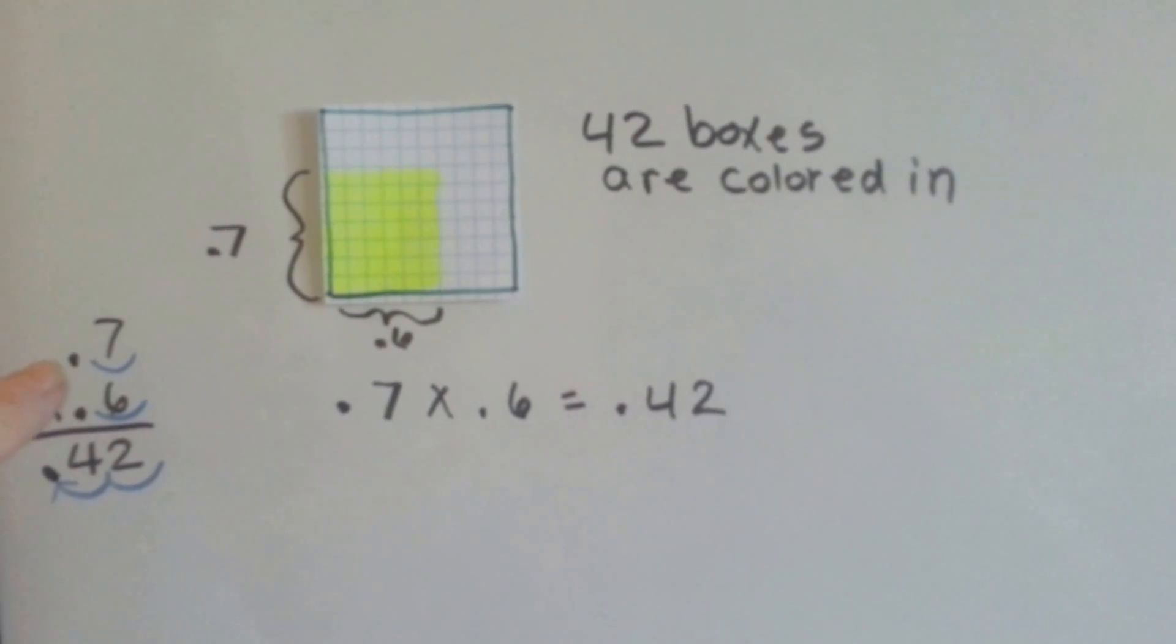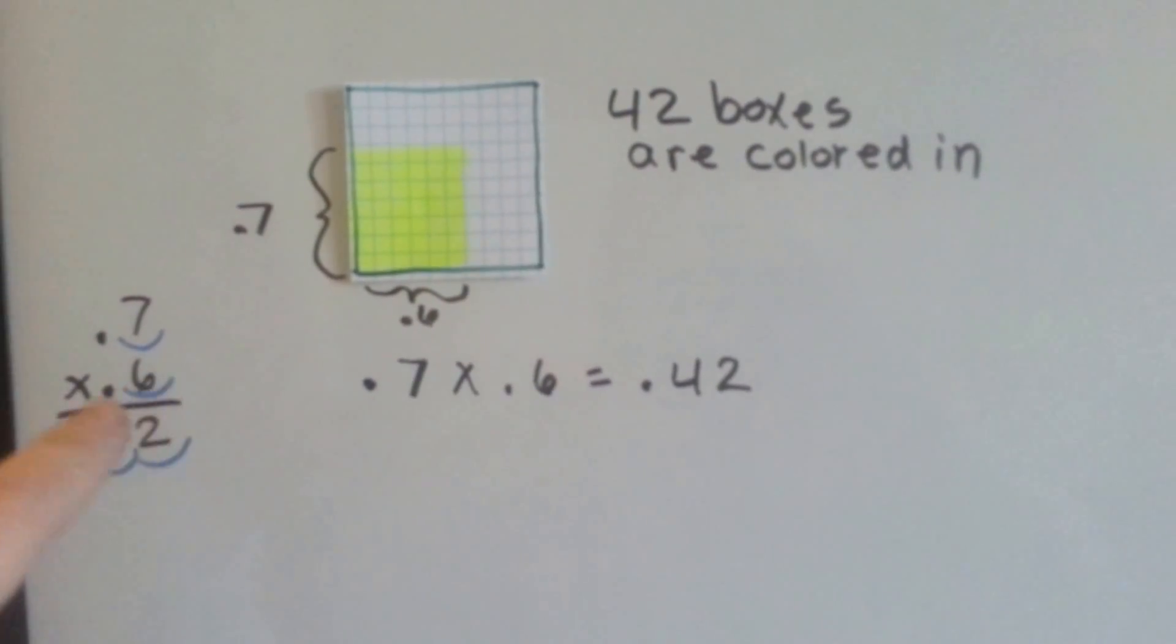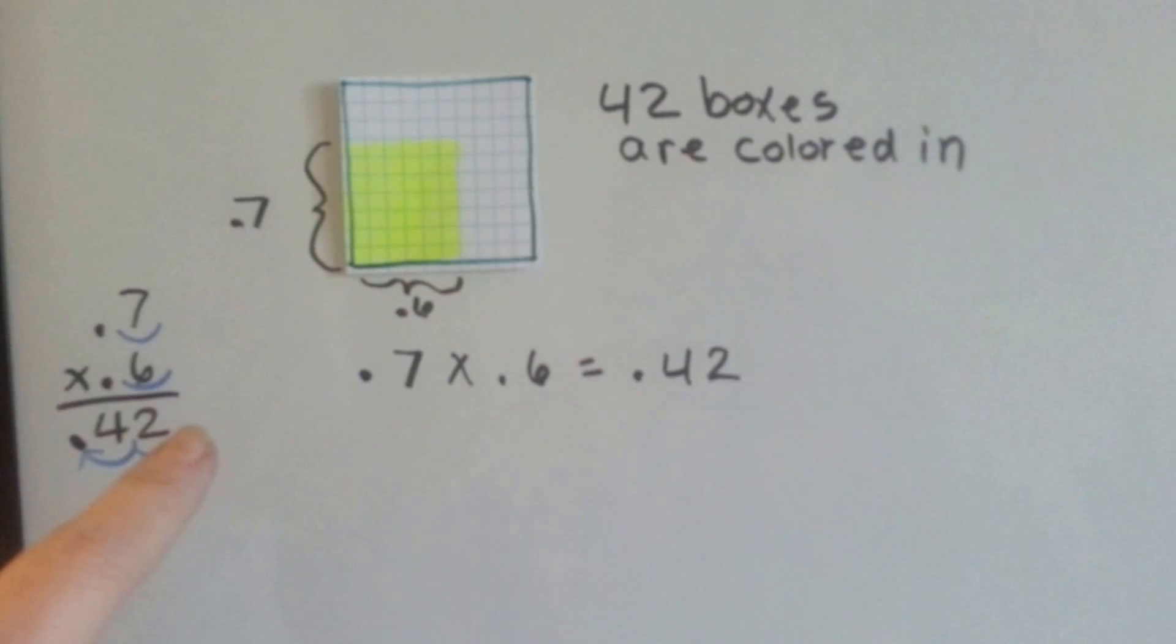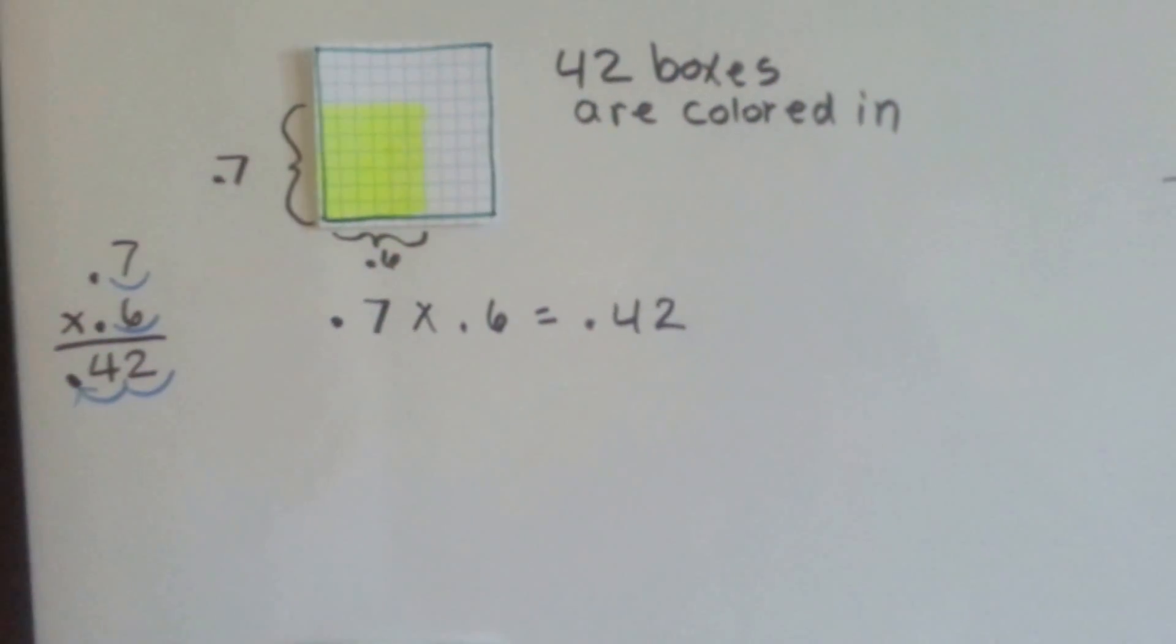If we did it the stacked way, 7 times 6 is 42. We hop once for the 7, we hop once for the 6, that's 2 times. So we hop 2 times for the answer. The decimal point's in front of the 4.